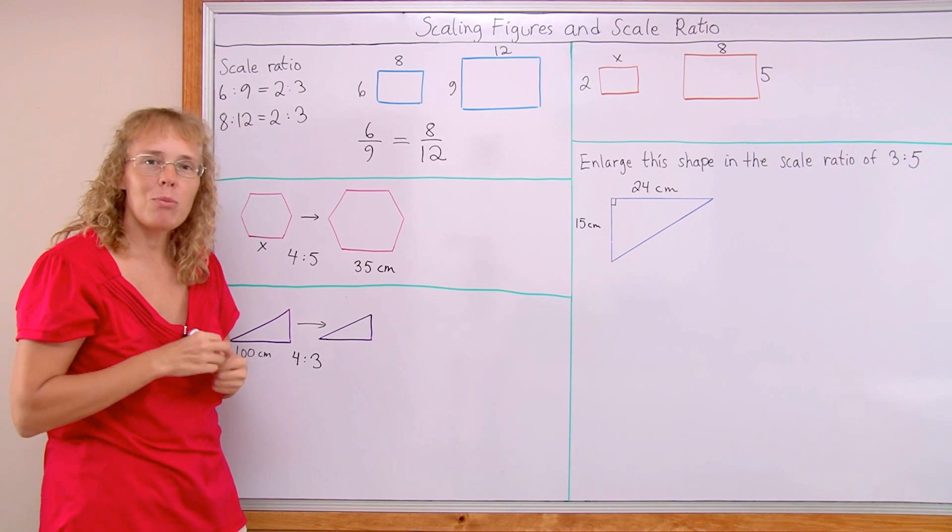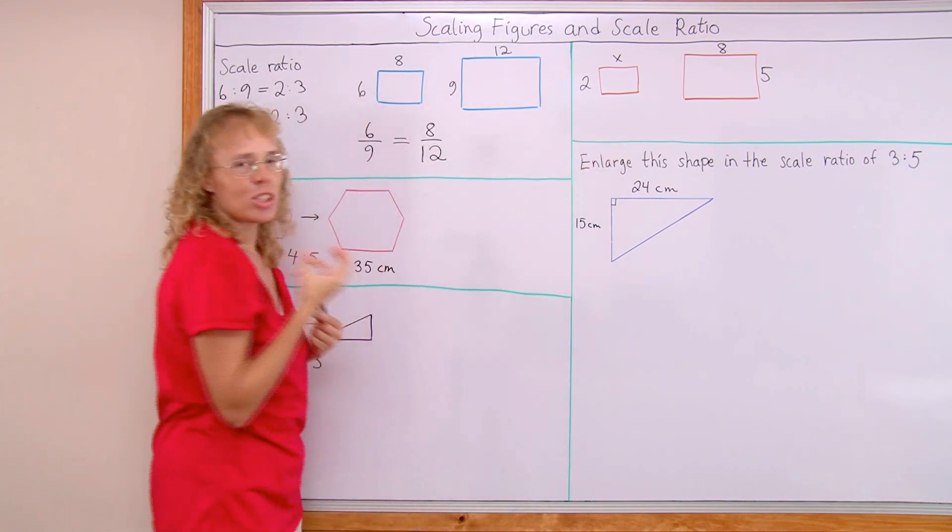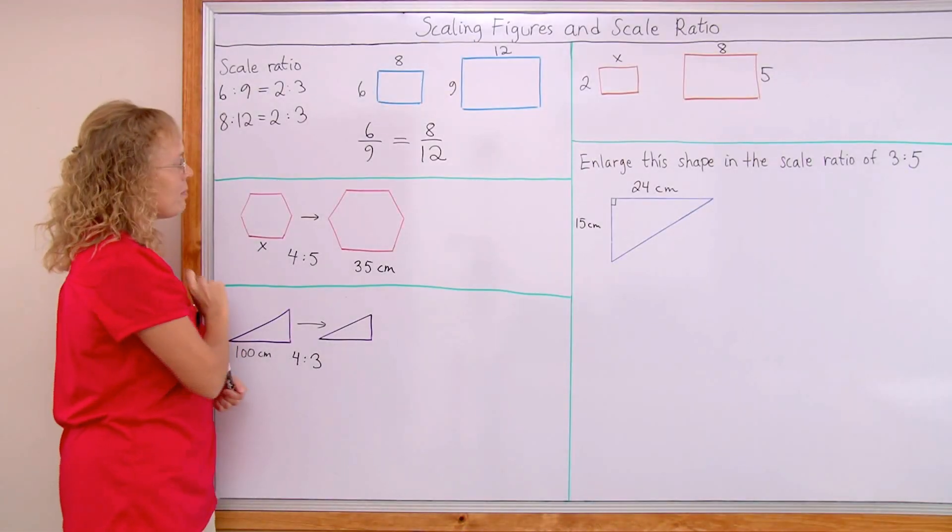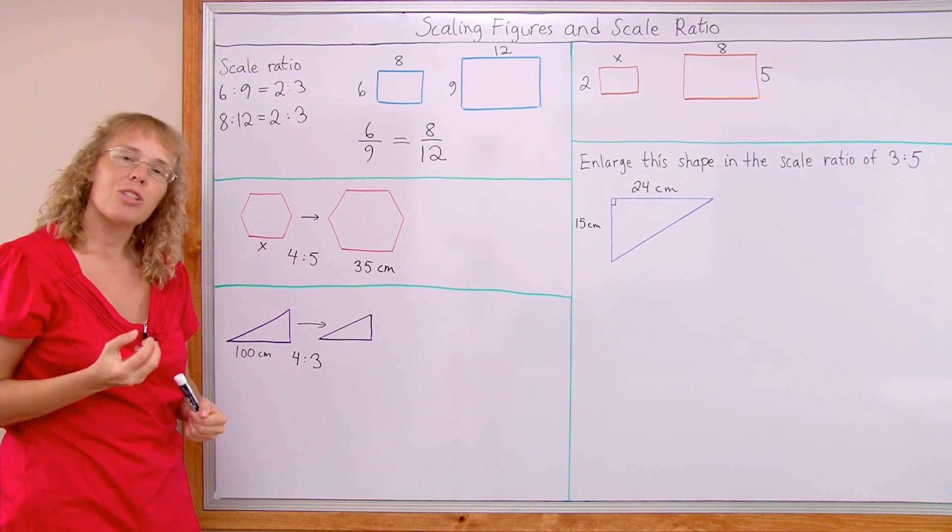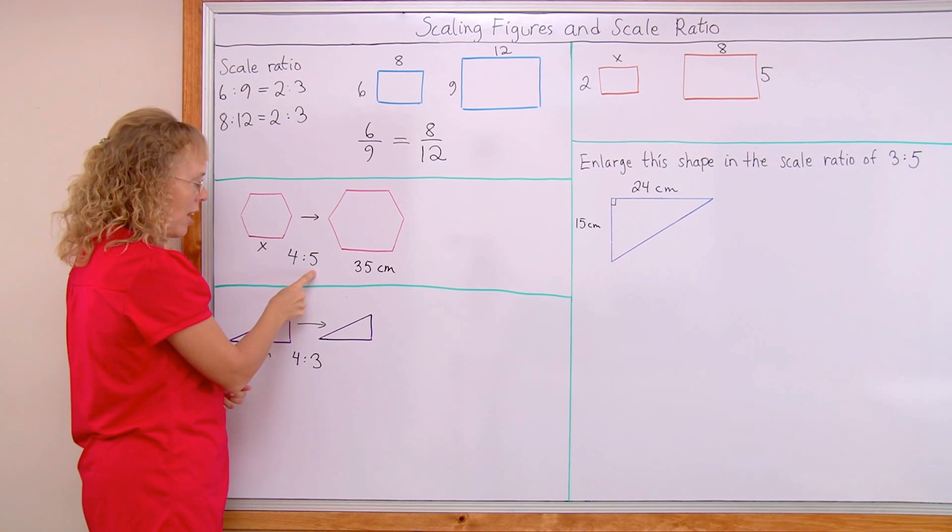And then you can have problems where one of these side lengths is unknown, like here. And then you can solve them using this proportion. Now this one though, we don't need a proportion here. I am going to show you another, a little different method. The scale ratio is 4 to 5.